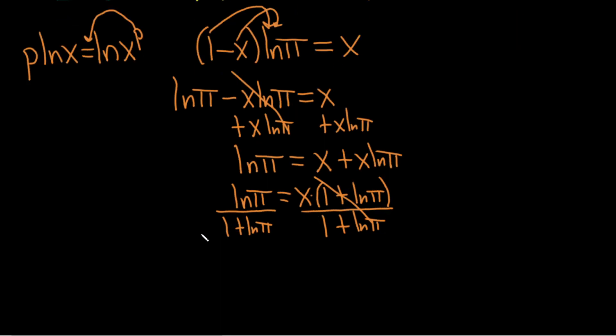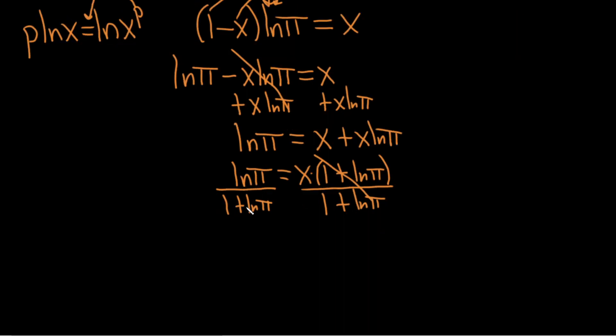Boom, these go away. And we're basically left with all of this as our solution. So x equals the natural log of π, what a cool answer, over 1 plus the natural log of π. That would be the solution to our equation.